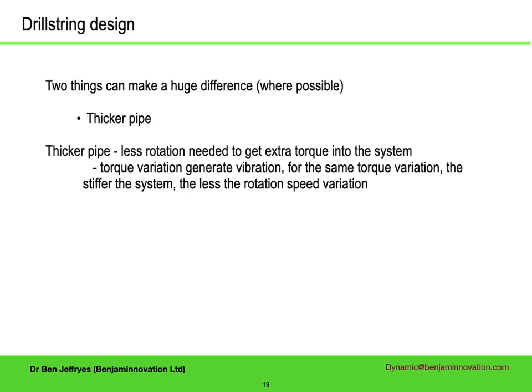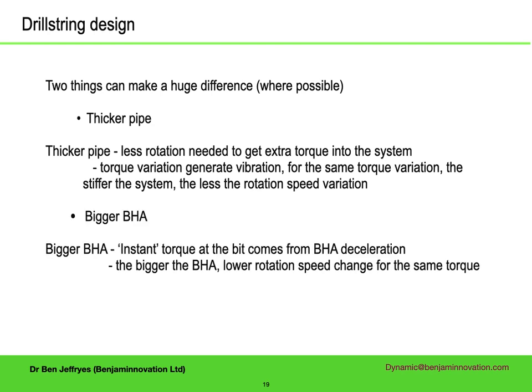Also, if you need extra torque because the bit has stopped or because you have hit hard rock, the pipe has to turn less to absorb that extra torque. Something less well appreciated is the role of the BHA. In an ideal world, there would be a rotating mass with a huge moment of inertia just above the bit, so that if the torque demand increased, the mass would just decelerate a tiny amount to generate the torque needed — torque equals moment of inertia times rotational acceleration. Everything has to fit in the hole above the bit, but having as much moment of inertia as possible in the BHA still reduces the deceleration that torque changes generate.